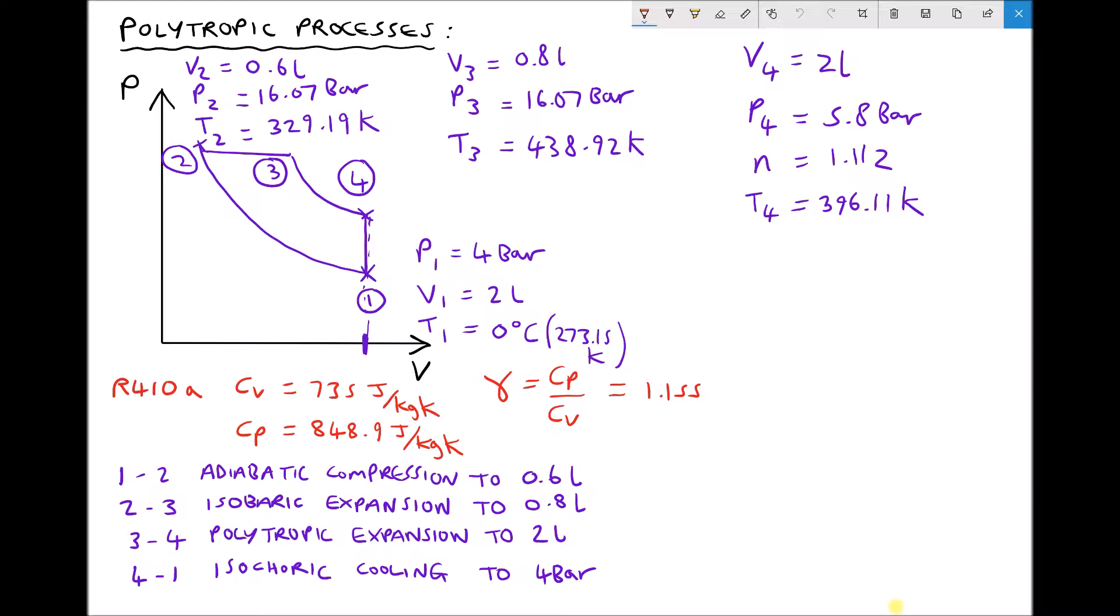In the previous video we introduced polytropic processes and we saw how the PV diagram in the top left hand corner can be produced for a cycle containing four processes. Process 1 to 2 was adiabatic compression, 2 to 3 was isobaric expansion, 3 to 4 was polytropic expansion, and 4 to 1 was isochoric cooling.